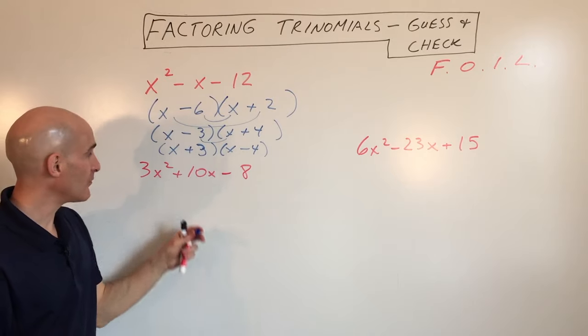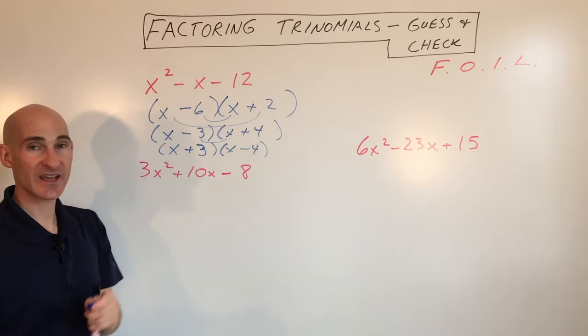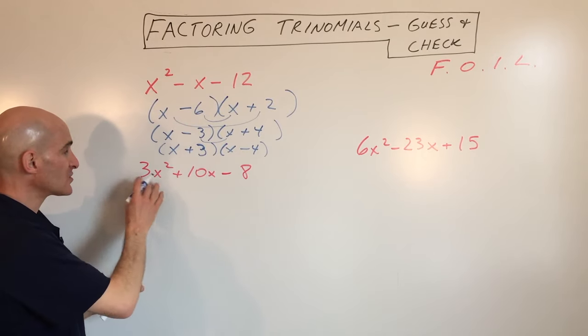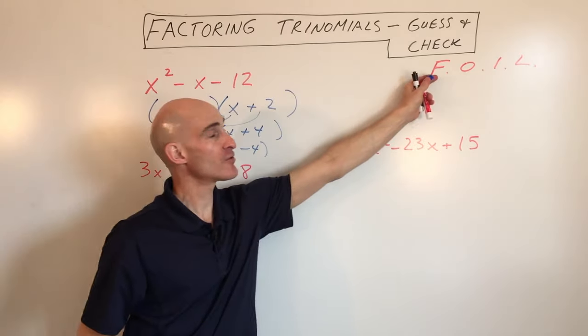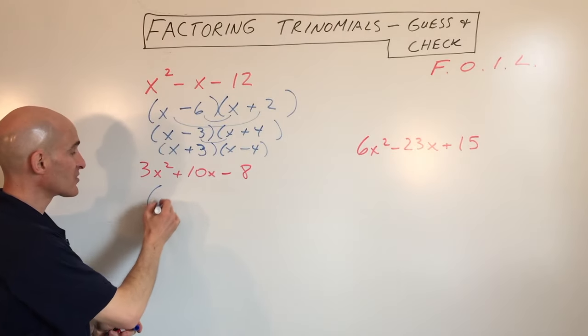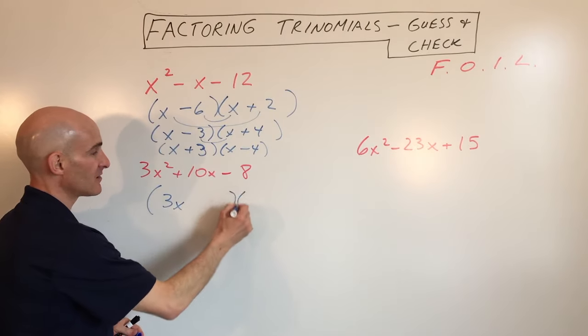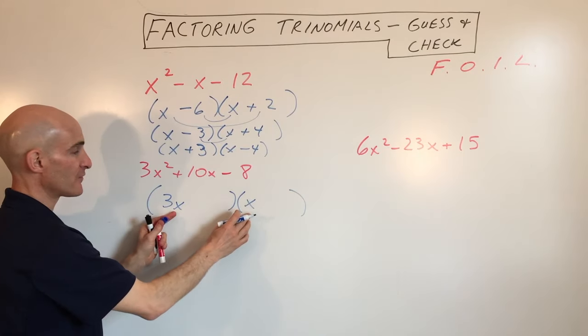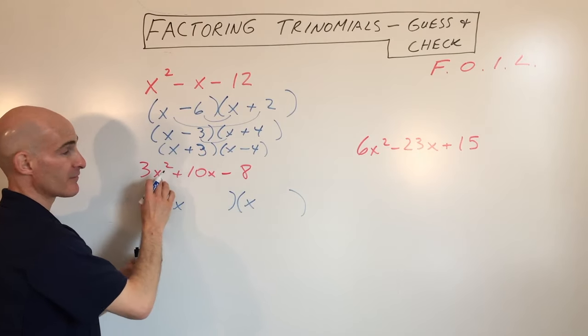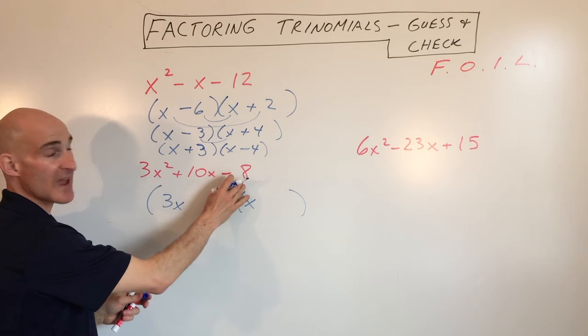Let's go to another example. 3x squared plus 10x minus 8. So to get 3x squared, the first term here, we're going to use 3x and 1x. So that gives you first times first, first term, 3x squared. Then we jump over to the last term, negative 8.